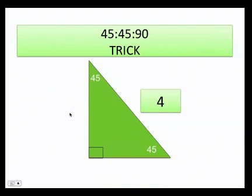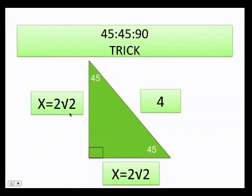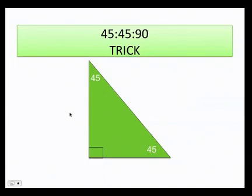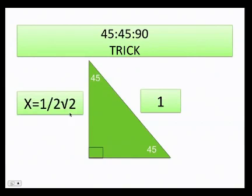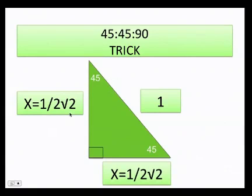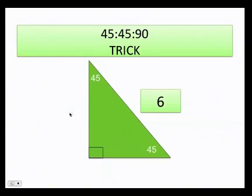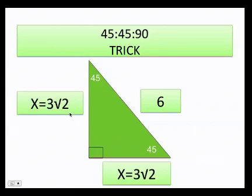If the hypotenuse is 1, divide by 2 to get one half, so each leg is (1/2)√2. If the hypotenuse is 6, divide by 2 to get 3, so each leg is 3√2.